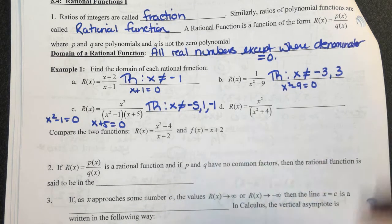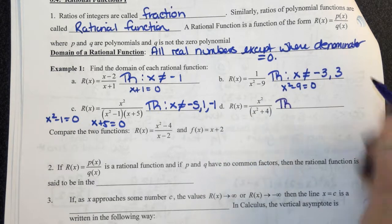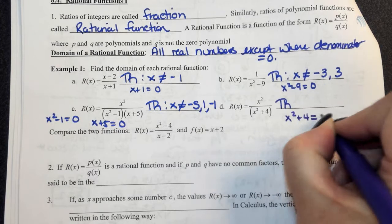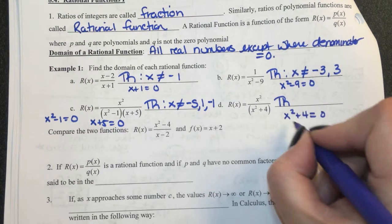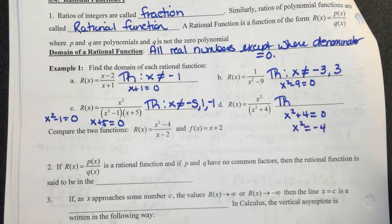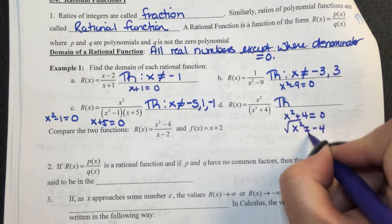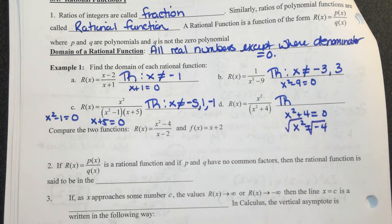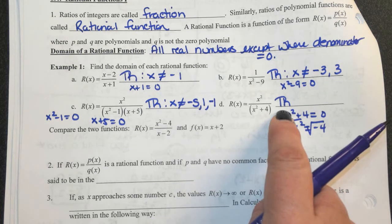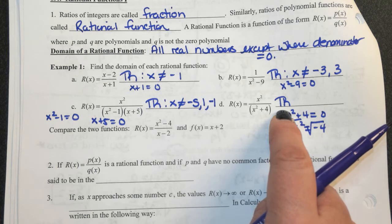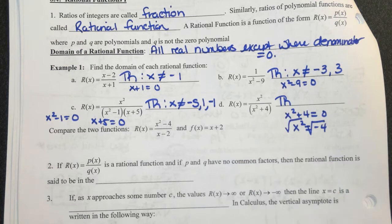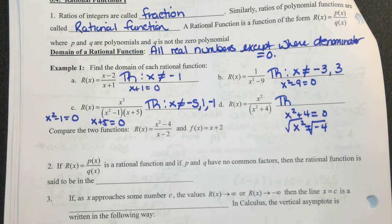Taking a look at d. The domain is going to be all reals. When I try to set this denominator equal to zero, I would subtract four, then take the square root of both sides. So the solutions would be the square root of negative four. These are going to be imaginary. So there is no value for x that I could plug in where we get zero in the denominator. This is a case where the domain is going to be all real numbers.